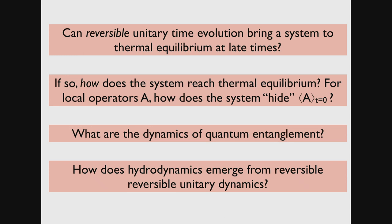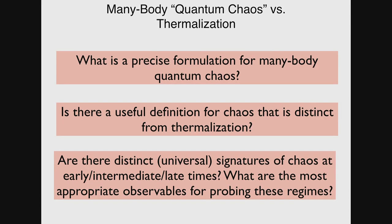This will be the bulk of my talk. Towards the end I also want to touch on notions of what's meant by many-body quantum chaos. This is a word that's currently very fashionable due to connections with black holes. Everyone's been talking about many-body quantum chaos, but what exactly does this mean? Is there a useful definition that's distinct from thermalization?